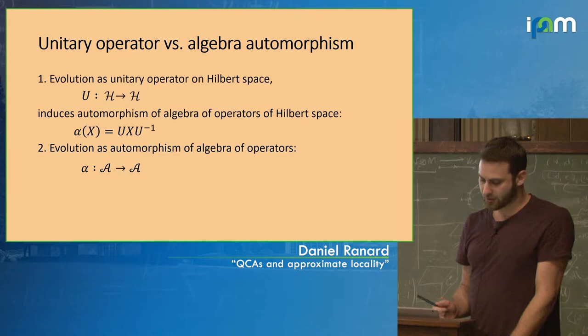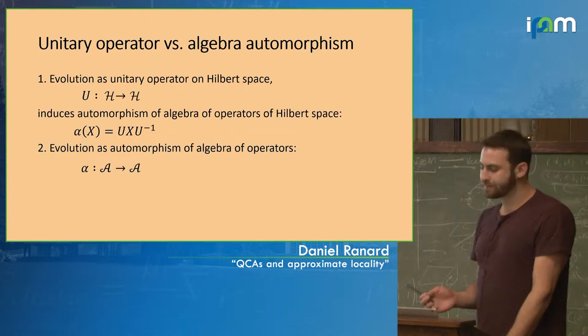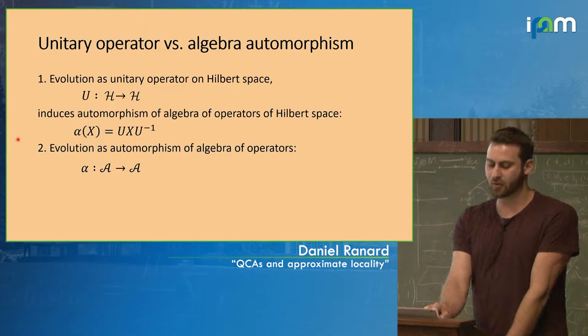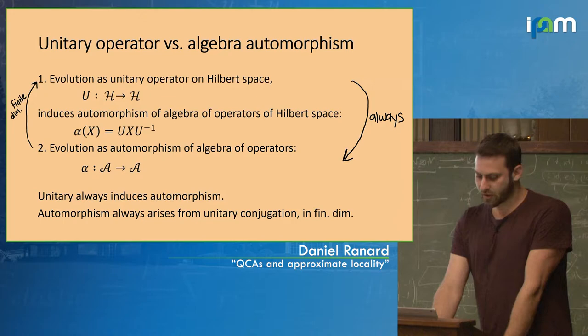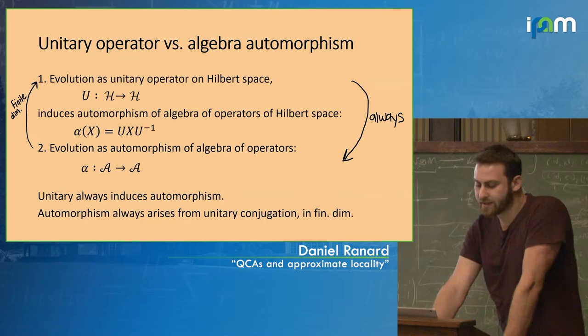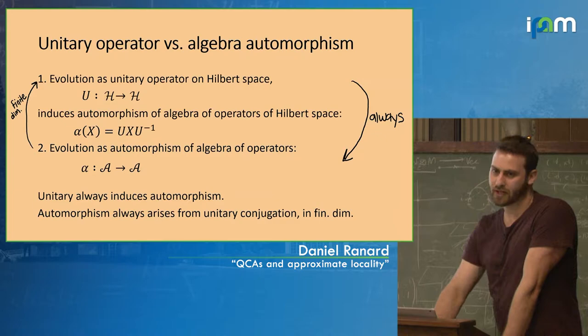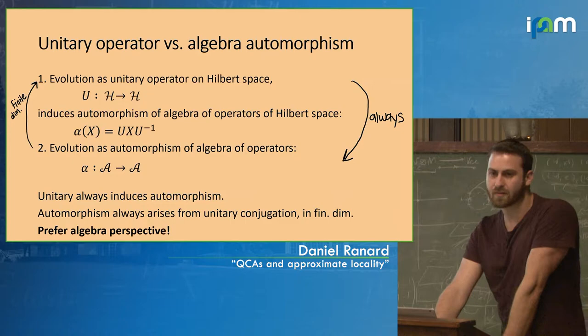Evolution is some unitary operator on the Hilbert space, and it induces an automorphism of the operator algebra by conjugation. On the other hand, you could just start with an automorphism. If you start with a unitary you get an automorphism. If you start with an automorphism you could ask: is it going to be implemented by a unitary conjugation? This is true in finite dimensions, and in infinite dimensions it's more or less true. The point is we're going to prefer the algebra perspective — from now on I'll be talking about this map alpha acting on the algebra of observables.